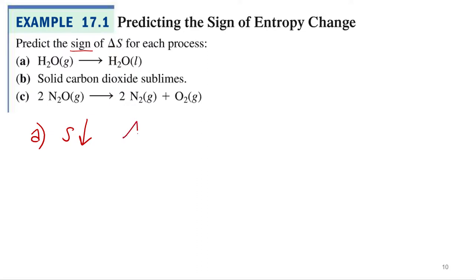So what do we think our sign for the change in entropy would be? Change in entropy is just going to be like change in anything else. Entropy of the final state minus the initial. Negative? Yep, so it's going to be negative.